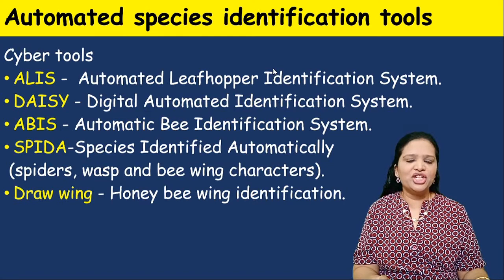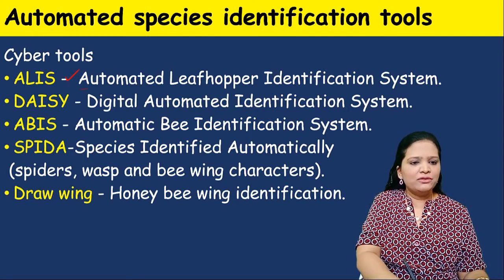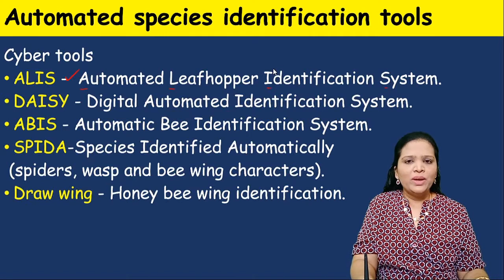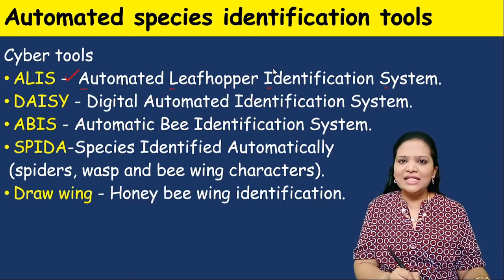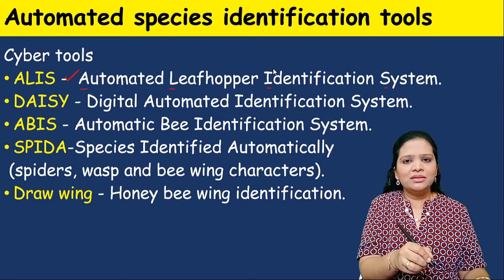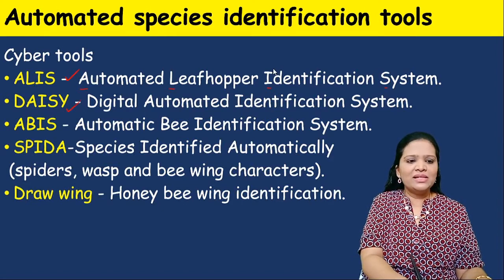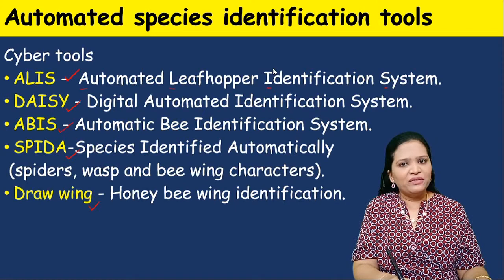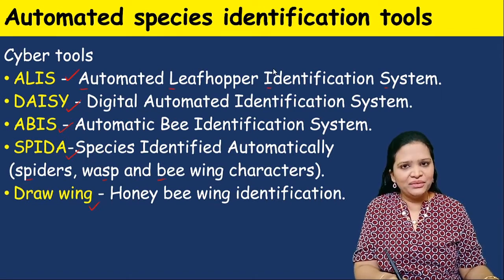We also have automated species identification tools. ALICE stands for Automated Leaf Hopper Identification System — a database where all discovered leaf hopper species are stored. A newly discovered leaf hopper can be compared against this database after DNA sequencing. Similarly, there are tools like DAISY, ABYSS, and SPIDER — which is used for identifying spiders, wasps, bees, and other insects. These are all automatic species identification systems.